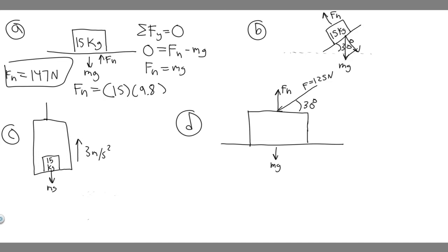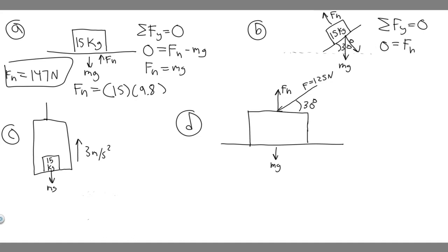We need to find the component of gravity perpendicular to the surface. Think of it like a triangle: the angle between the perpendicular line and mg is actually equal to the incline angle, so that angle is 30 degrees. The hypotenuse of this triangle is mg. We're trying to find the adjacent side, which we'll call x. Using SOH-CAH-TOA, cosine of 30 equals adjacent over hypotenuse, so cosine of 30 equals x over mg, meaning x equals mg times cosine of 30.